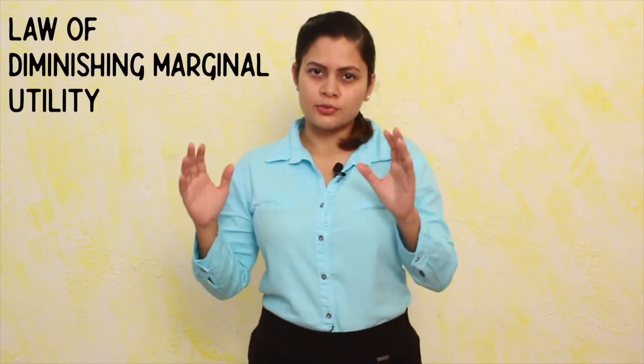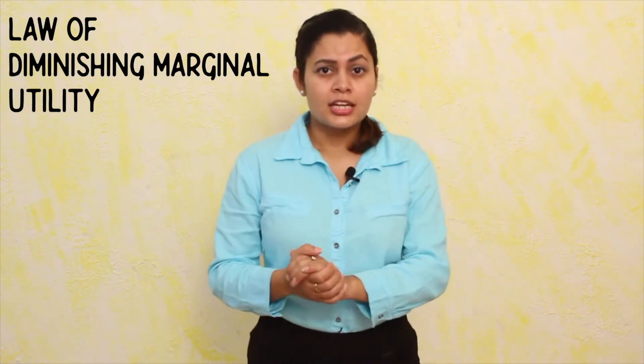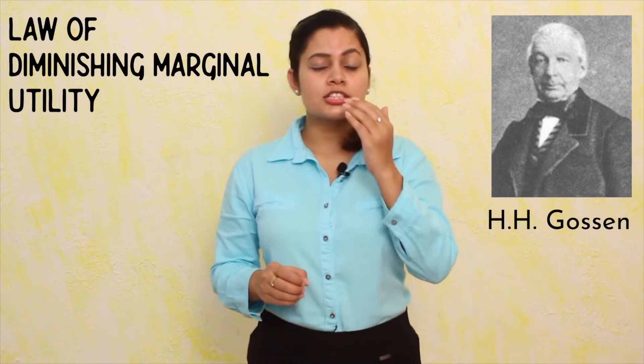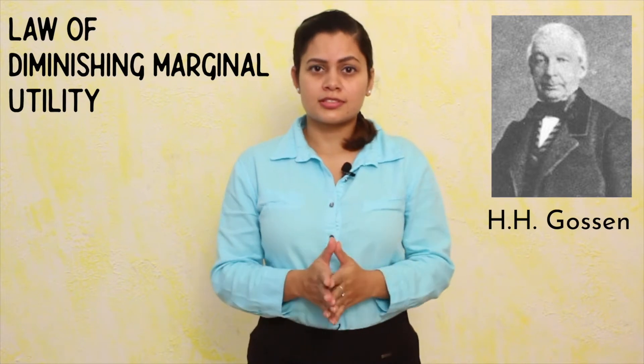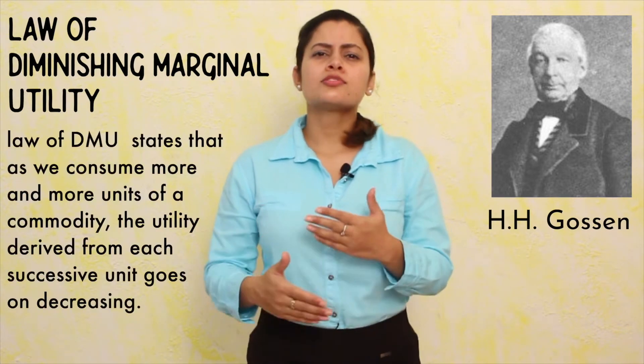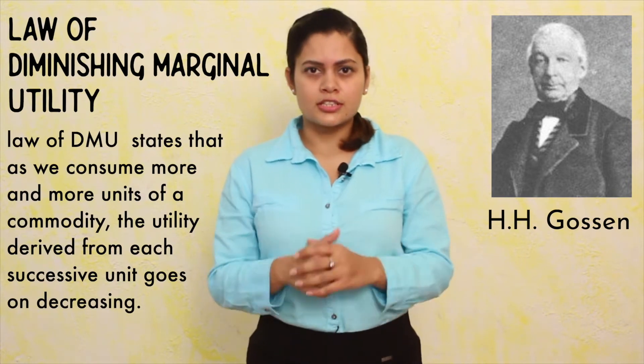Now let us discuss the concept of the Law of DMU — the Law of Diminishing Marginal Utility. This concept was given by H.H. Gossen, a German economist. According to him, as you consume a commodity, the utility will decline. He took some assumptions to make this concept clear.